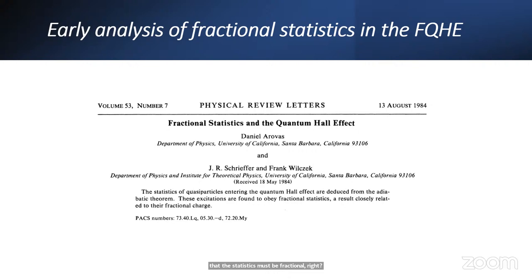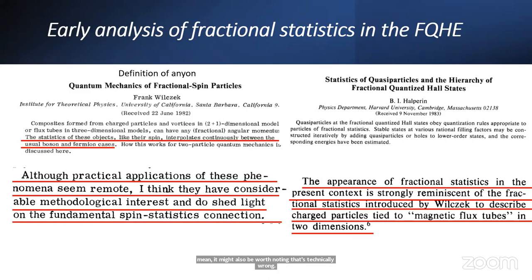I just have more comments. That sentence by Wilczek, it might also be worth noting that it's technically wrong. The statistics cannot take any continuous value. It can only take rational values. And that's one of the key important things about the theory that is not clear. I will call Frank and tell him that he needs to publish a correction. You could imagine that the word fractional in there embraces the idea that it should be a rational value.